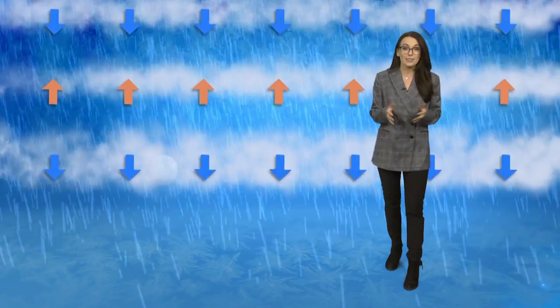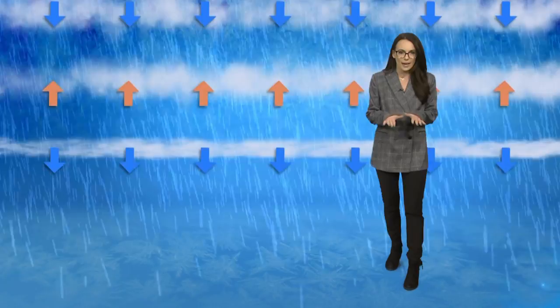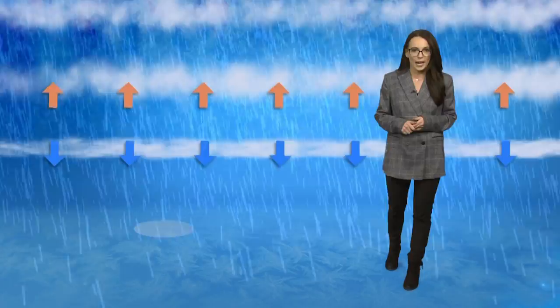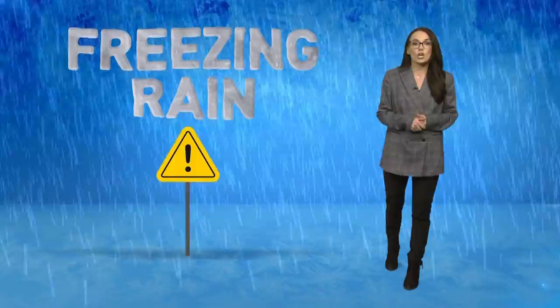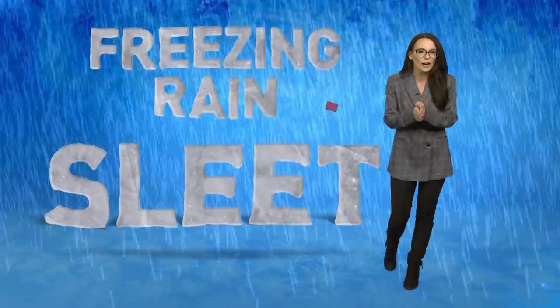If the layer of below-freezing air is very shallow, that raindrop will not freeze and it lands as rain and freezes on the ground. We call that freezing rain and it creates a sheet of ice, which is much more dangerous. That's when we can get many car accidents and power outages. So if we're forecasting for sleet or freezing rain like we are for this storm, you would much rather have sleet than treacherous freezing rain.